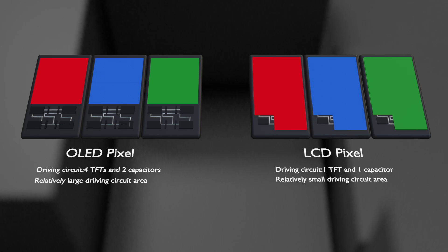In the case of OLED, unlike LCD, since the brightness is adjusted by adjusting the amount of current, the structure of the circuit part is complicated, and the area occupied within the subpixel is relatively larger than that of the voltage-driven LCD. As a result, the area through which light can pass in one subpixel or pixel becomes relatively small. The ratio of the area where light is emitted to the pixel area is called the aperture ratio. After all, it can be said that the OLED has a low aperture ratio.